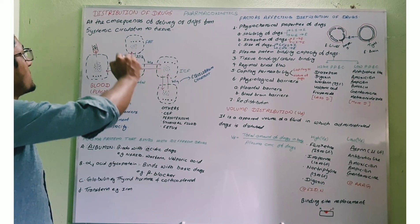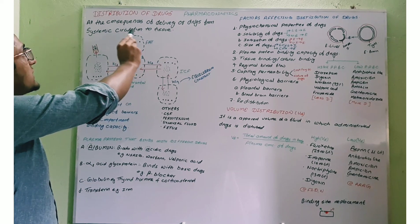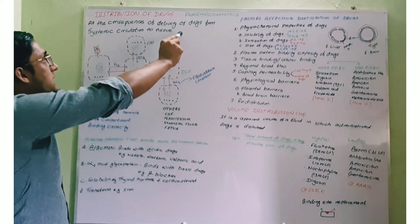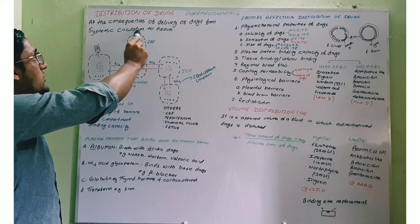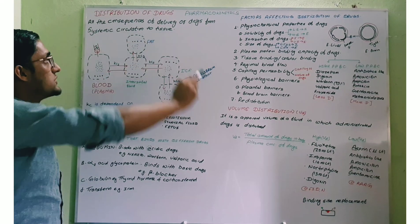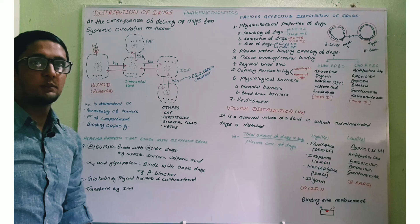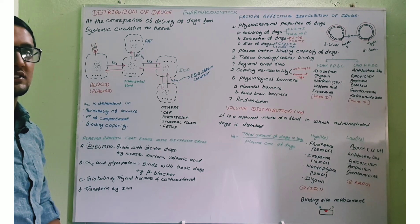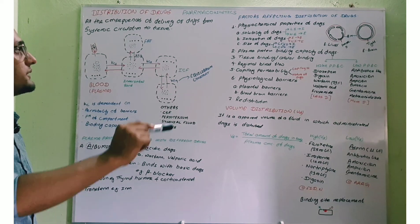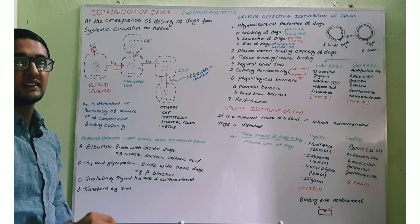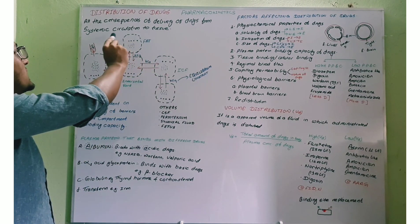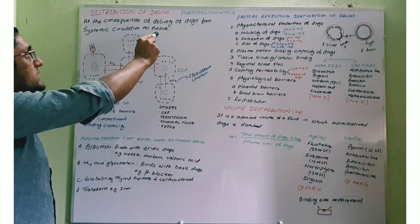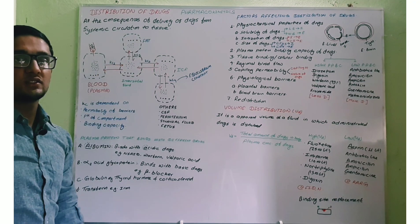Simply, distribution means all the consequences of the delivery of the drug from systemic circulation to the tissue. In simple language, distribution means delivery of the drug from the systemic circulation to the tissue.